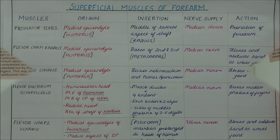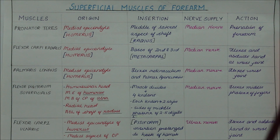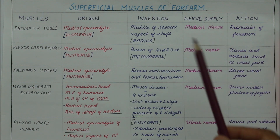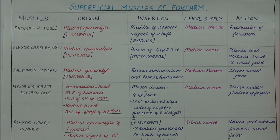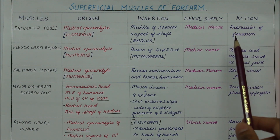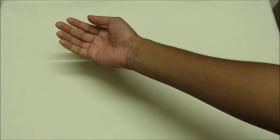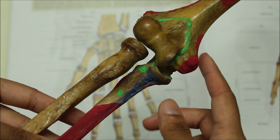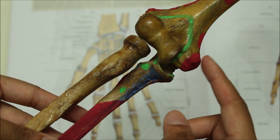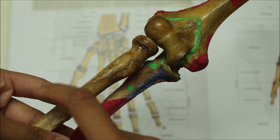Moving on to its nerve supply, the pronator teres is supplied by the median nerve. All the superficial muscles of the anterior aspect of the forearm are supplied by the median nerve except for the flexor carpi ulnaris. The action of the pronator teres is pronation of the forearm. As a whole, it originates from the medial epicondyle of the humerus and inserts into the middle of the lateral aspect of the shaft of the radius.